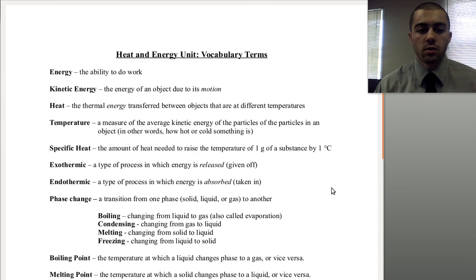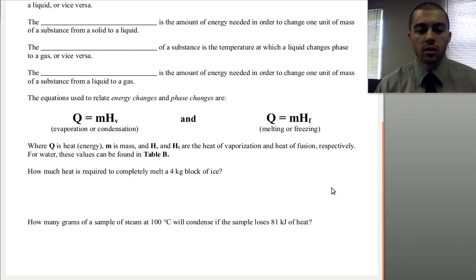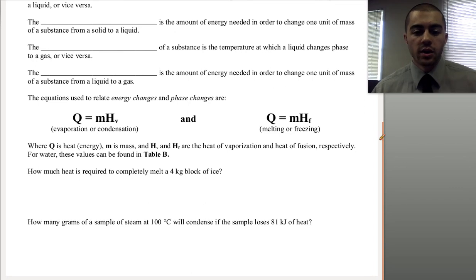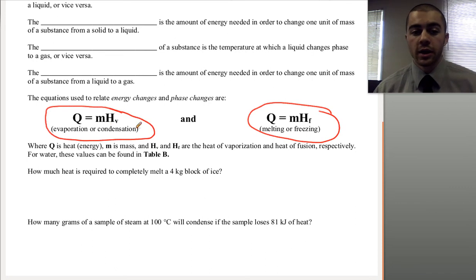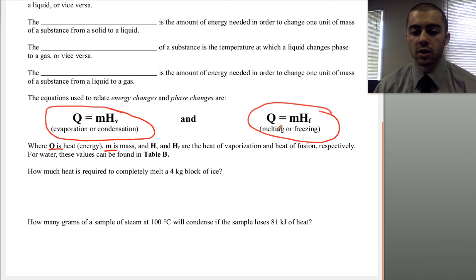We have two equations for phase changes. For vaporization or condensation, we use Q equals M times HV, the heat of vaporization. For melting or freezing, we use Q equals M times HF, the heat of fusion. In both equations, Q is heat and M is mass. HV and HF are the heat of vaporization and heat of fusion respectively, and all these values can be found in Table B in your reference table.